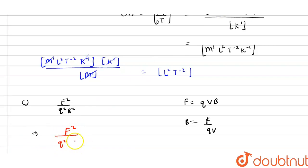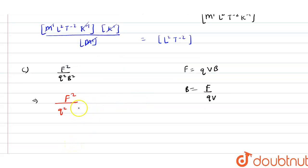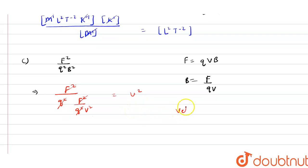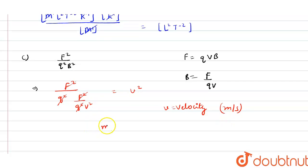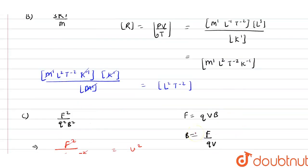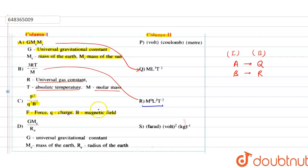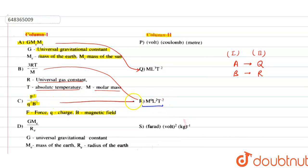Substituting B = F/(qv) into F²/(q²B²): we get F²/(q² × F²/(q²v²)) = v². Since velocity v has units m/s, v² has dimension L²T⁻². So option C also matches with option R.